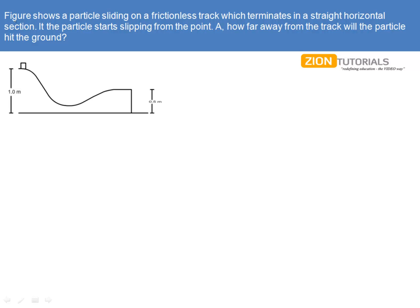As the question says, figure shows a particle sliding on a frictionless track, which terminates in a straight horizontal section. If the particle starts slipping from point A, how far away from the track will the particle hit the ground?